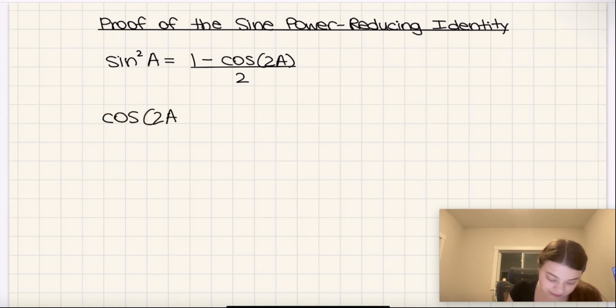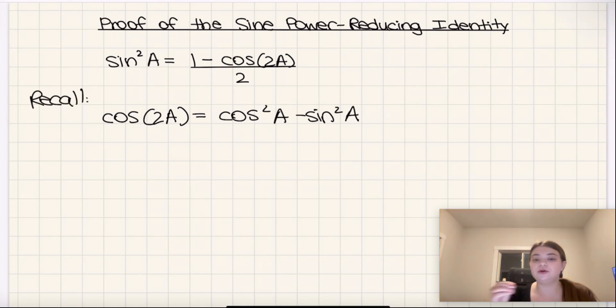which states that cosine 2A equals cos squared A minus sine squared A. We're going to recall this identity and use it to prove the power reducing identity.